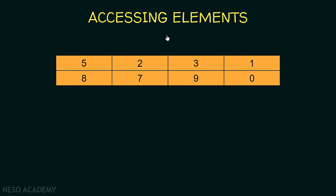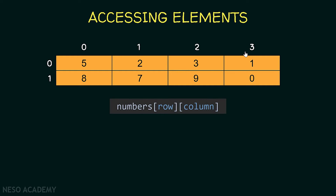Now let's talk about accessing the elements of a two-dimensional array. Suppose that our two-dimensional array looks like this. Then of course we have some indices. The first row index is zero and the second row is one. Similarly, the index of the first column is zero, the second one is one, and so on. So to access an element in this array we are going to use two indices — the index of the row and the index of the column. We will use the name of the array, suppose that it is called numbers, and after that we will open two brackets. The first one will contain the index of the row and the second one the index of the column.